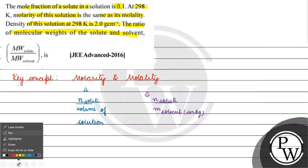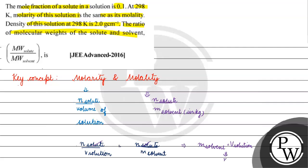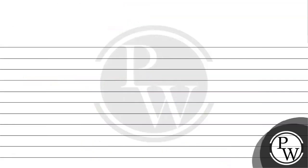Now, molality equals moles of solute divided by mass of solvent. We have the density of the solution, and now we will use density of the solution to relate the masses.